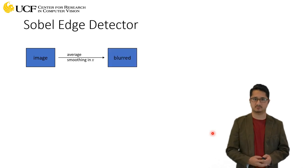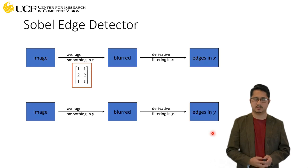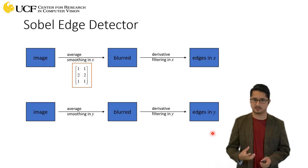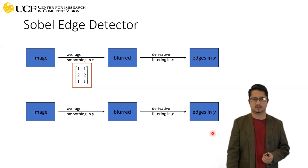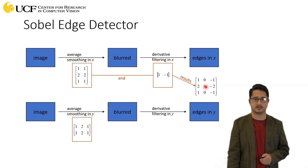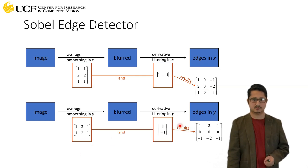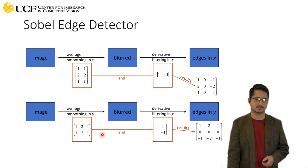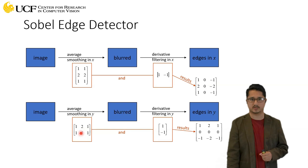The Prewitt edge detector uses a box filter where all values are one, giving equal weight to all neighborhood pixels. Sobel, on the other hand, uses a weighted filter that gives more weight to the current location. The derivative mask remains the same. Combining these filters gives a single filter for one-step application — the same is true for the y direction. So the key difference between Prewitt and Sobel is only the smoothing operation.